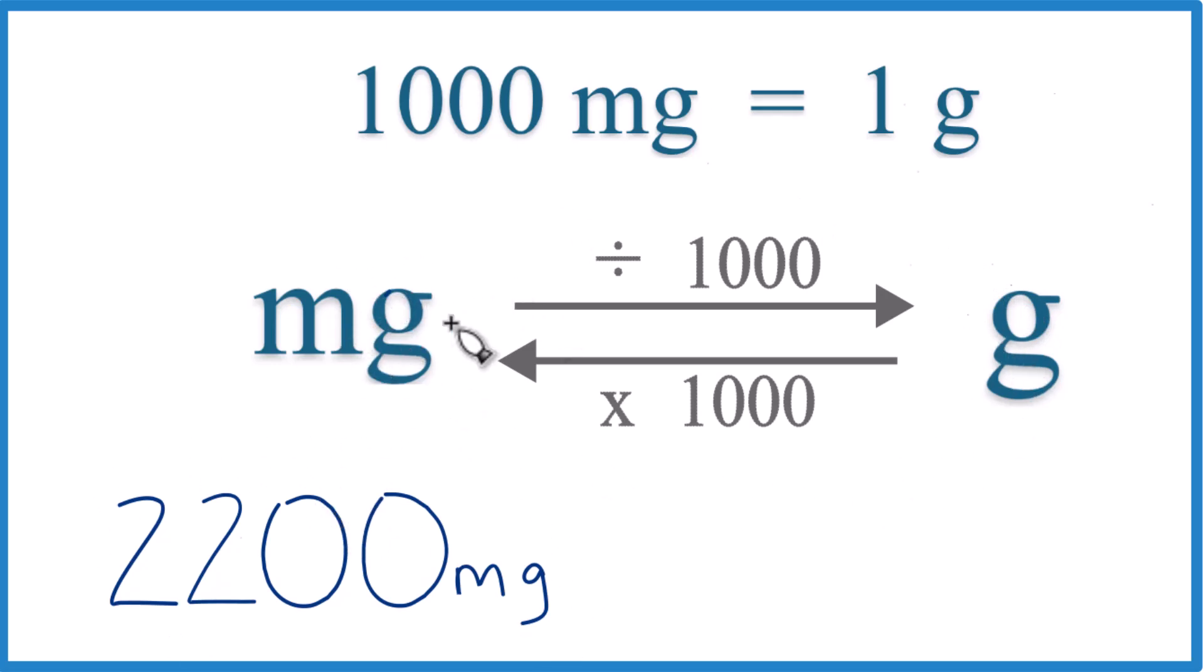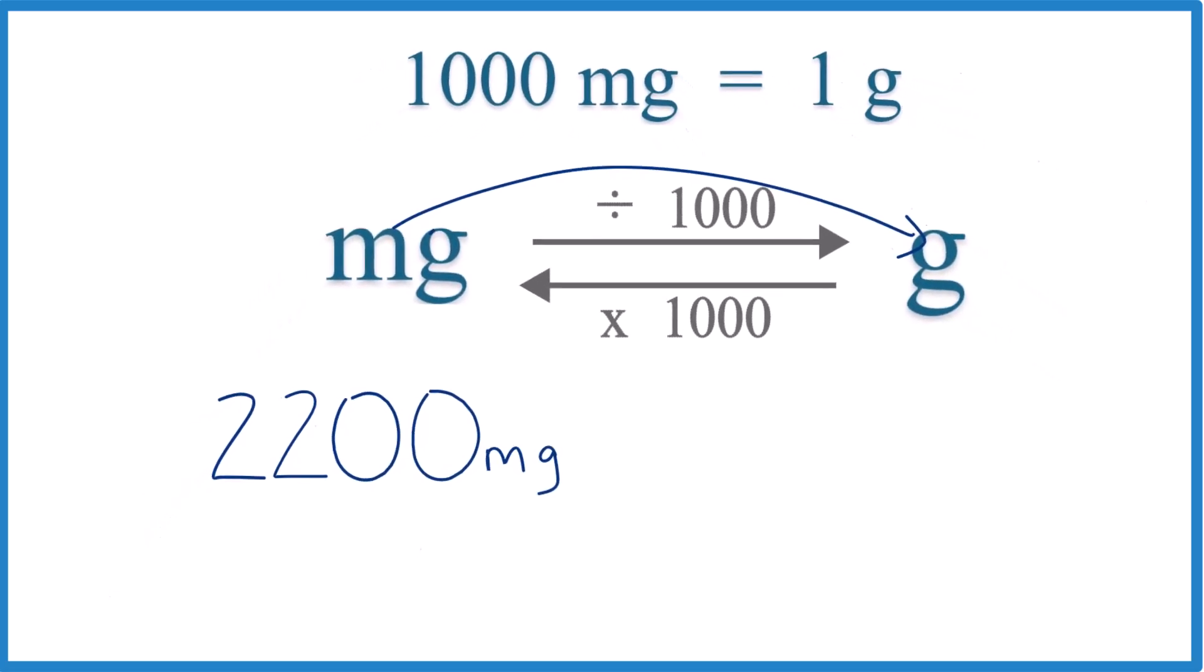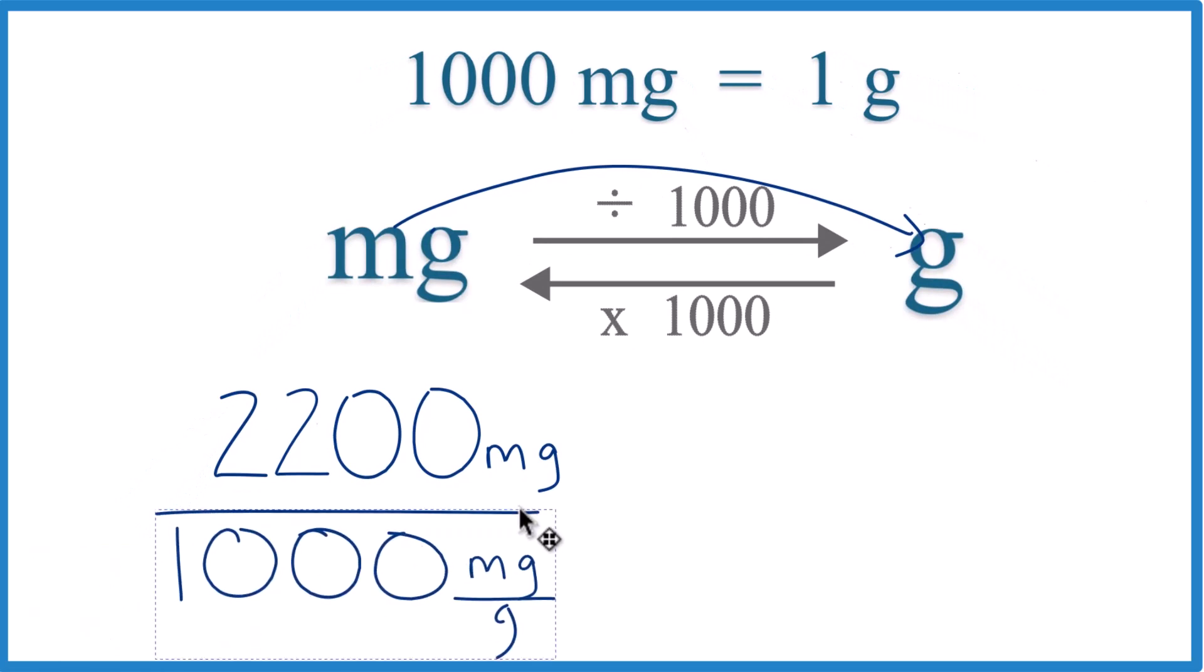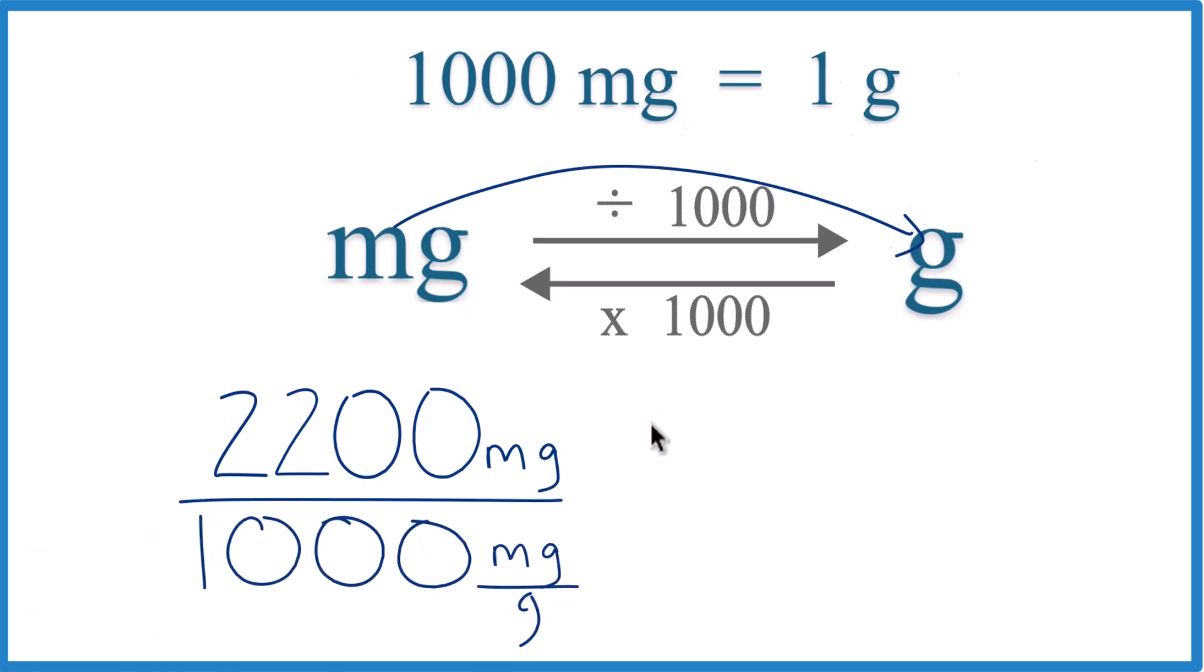In this case, we have 2,200 milligrams. We want to get to grams, so we're going to divide by 1,000. So we take our 2,200, divide it by 1,000, and that'll give us grams.